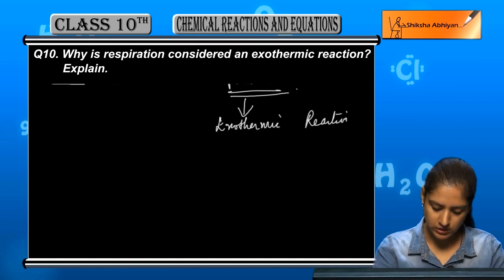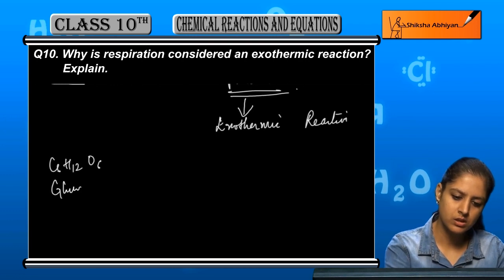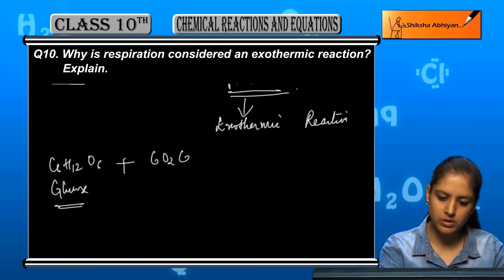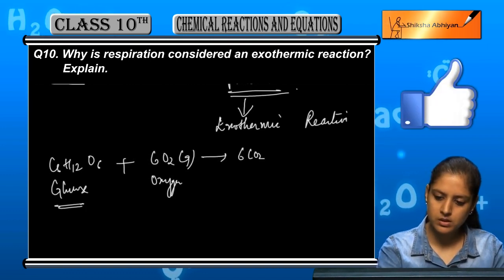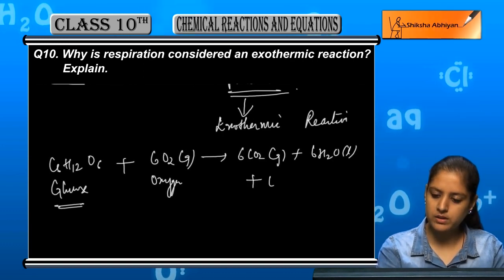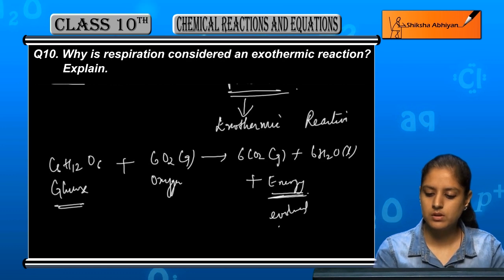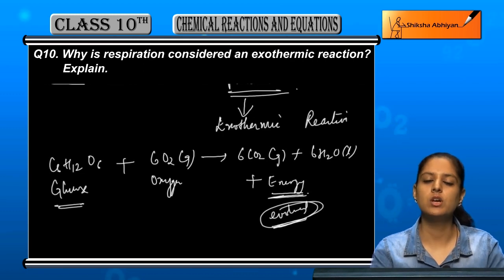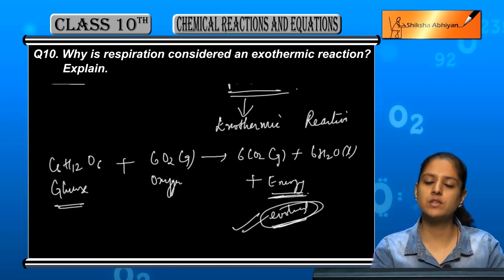Let's look at the chemical equation. It has C6H12O6, which is glucose. This energy is given out — it is being evolved. So we say this is an exothermic reaction. If energy is absorbed, it is endothermic. But because energy is being evolved, being given out, this is an exothermic reaction.